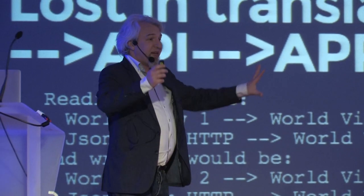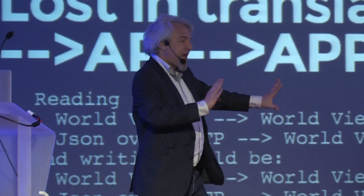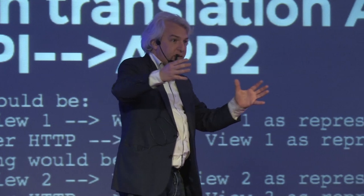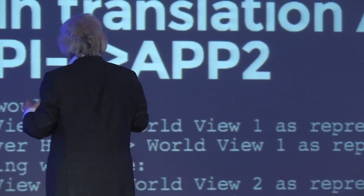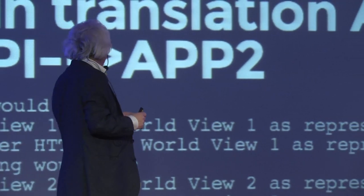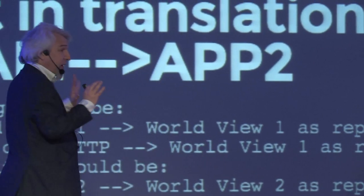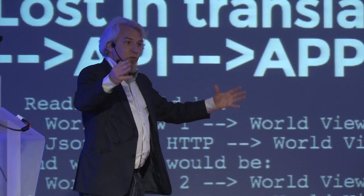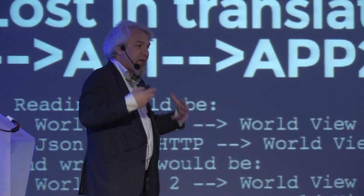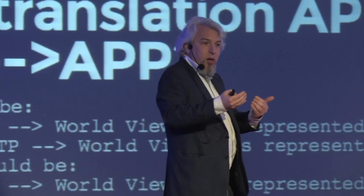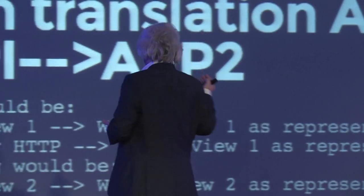What happens every time is that we have app one, a middleware which will be the API — the transport layer, the protocol layer, and the serialization together. We have worldview one: the way a system understands the world, its ontology, its semantics, its concepts, and a way for it to translate that into an intermediary form like JSON API.